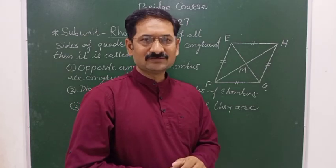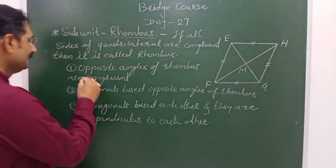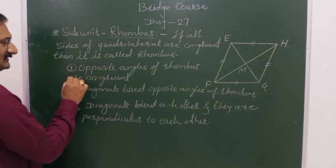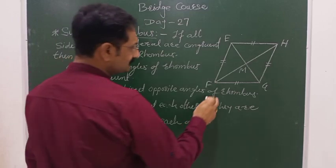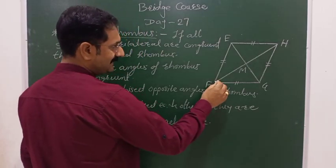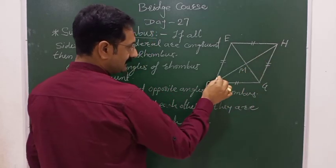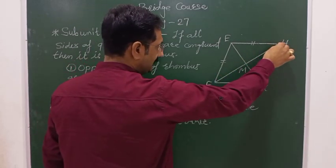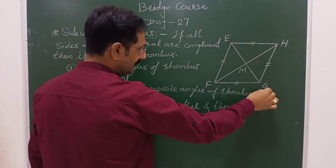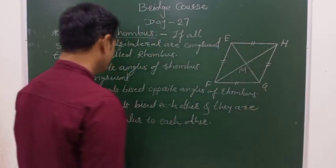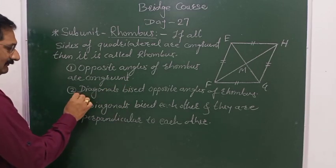When the sides are congruent, the first property is: opposite angles are congruent. Angle E and angle G are congruent, and angle F and angle H are congruent. These are the opposite angles being congruent. That is the second property.